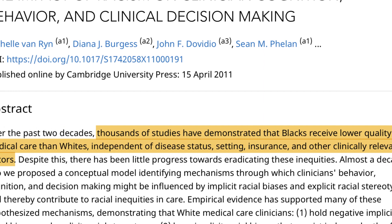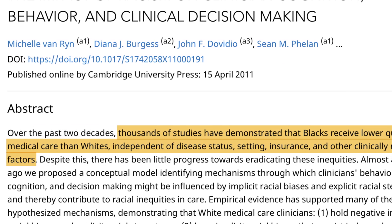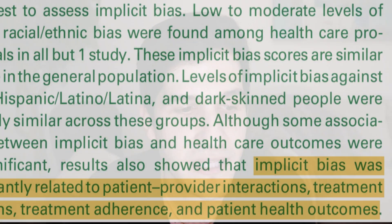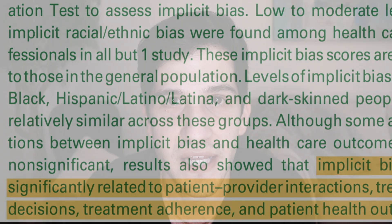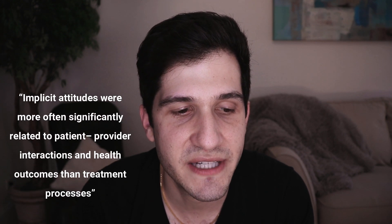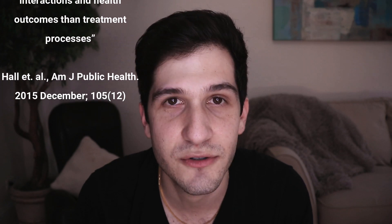In the United States, Blacks receive lower quality health care than whites — and that's independent of disease status, clinical setting, insurance, and other clinically relevant factors. There's evidence that implicit bias is significantly related to patient-provider interactions, treatment decisions, treatment adherence, and patient health outcomes. Perhaps most strikingly, implicit attitudes are more often significantly related to patient-provider interactions and health outcomes than treatment processes themselves. That means everything you learned in medical school and residency can be less important than the biases that come into play in the patient-provider relationship, and reducing bias can do as much good as or more good than any of the treatments or medications you provide.